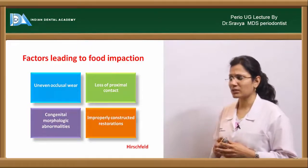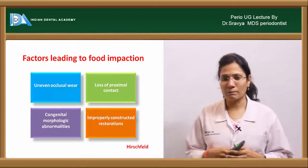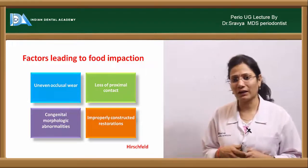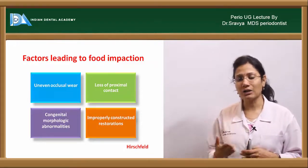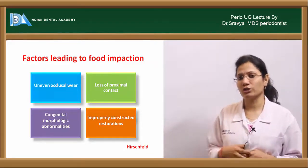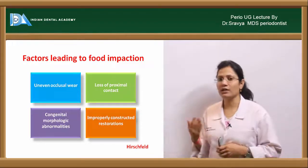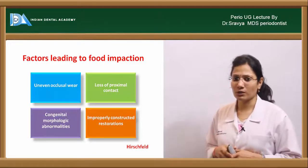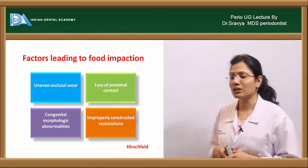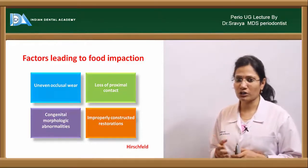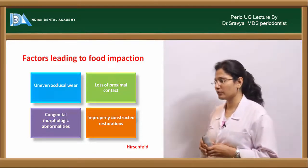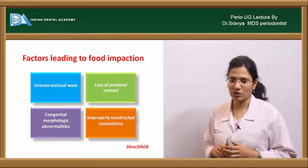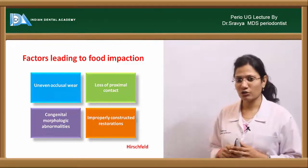What are the factors leading to food impaction? Hirschfield has given four factors which are responsible for causing food impaction. They include uneven occlusal wear, loss of proximal contact, congenital morphological abnormalities of the teeth, and improperly constructed restorations.